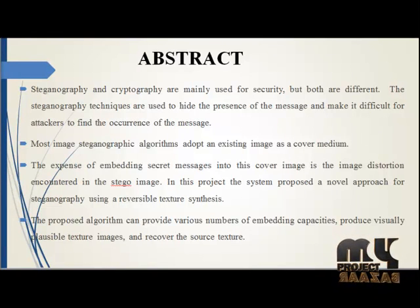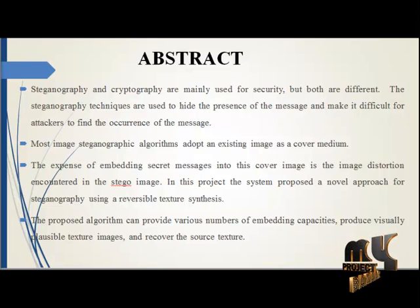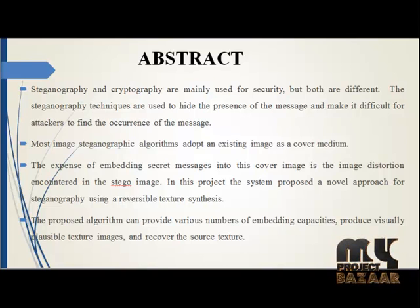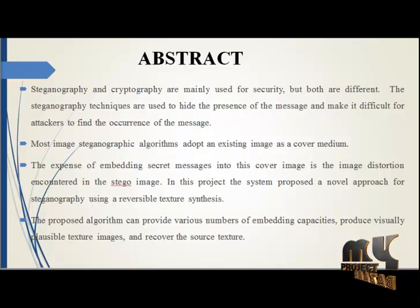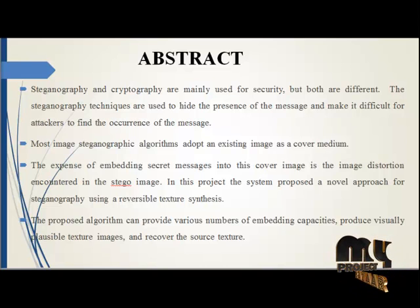Coming to the abstract, we propose a novel approach for steganography using reversible texture synthesis. A texture synthesis process resembles a smaller texture image with similar local approaches and arbitrary size. We weave the texture synthesis process into steganography to conceal the secret image. In contrast to using an existing cover image, our algorithm conceals the source texture image and embeds a secret image message during the process of texture synthesis. This allows us to extract the secret image and source texture from a stegno synthesis texture.